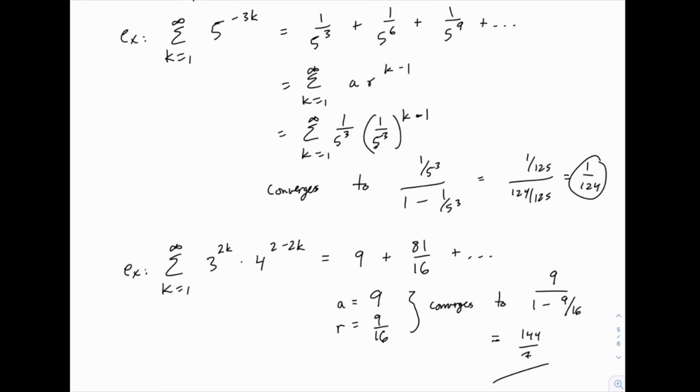So going forward, we're going to talk about other examples of series and how we can test whether they converge or diverge, but a geometric series is our first category of series, and it has a very easy test for whether it converges or diverges. All you have to do is look at the value of r.